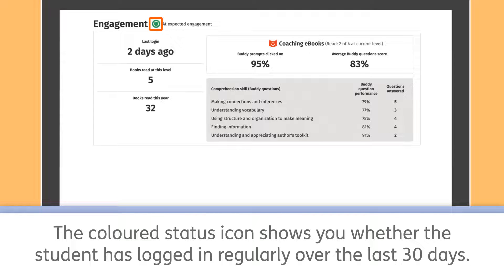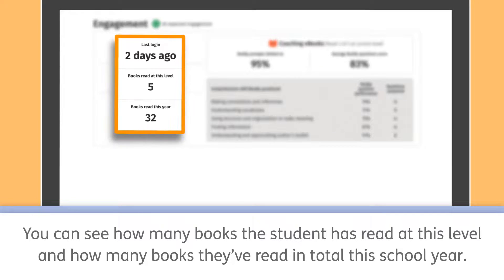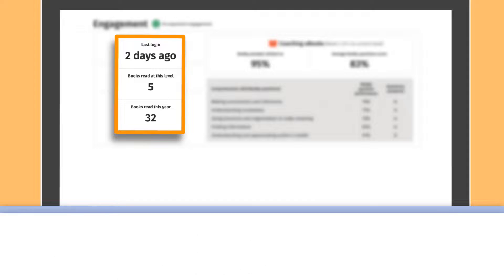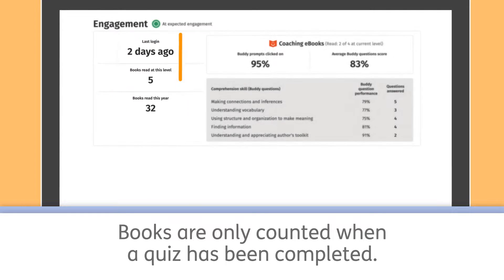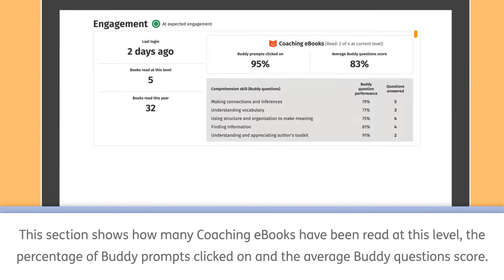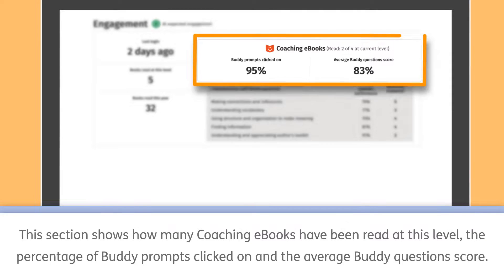The coloured status icon shows you whether the student has logged in regularly over the last 30 days. You can see how many books the student has read at this level and how many books they've read in total this school year. Books are only counted when a quiz has been completed. This section shows how many coaching e-books have been read at this level, the percentage of Buddy prompts clicked on and the average Buddy question score.